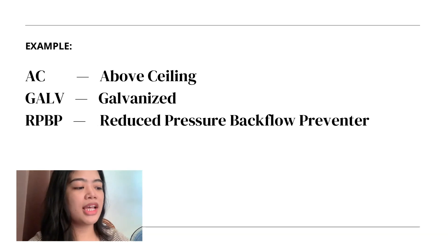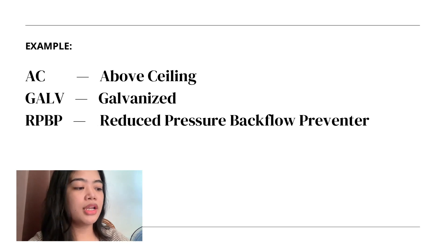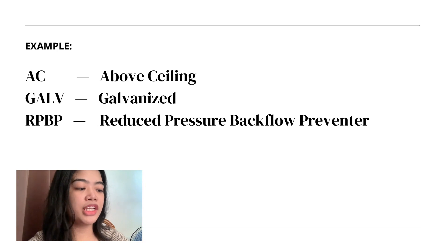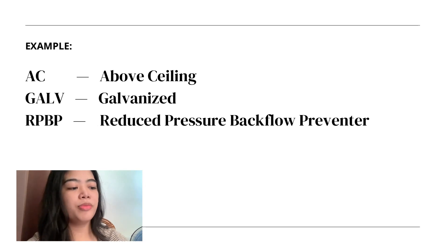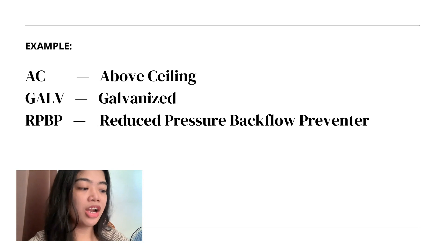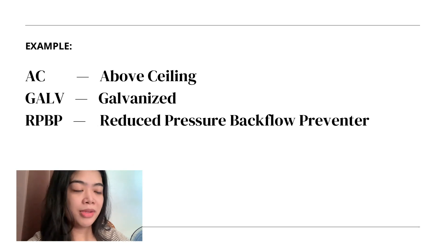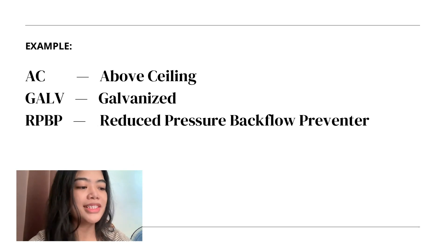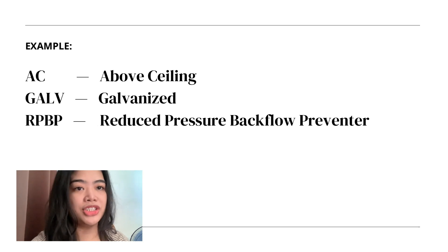Another example is 'reduced pressure backflow preventer.' To make it shortened, we only tend to use the initial letters of each word, so the simplest form of abbreviation for this word is RPBP. This is how abbreviation works in determining certain terminologies.